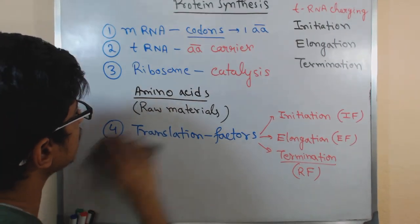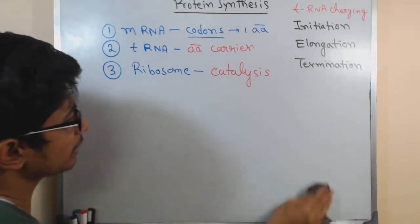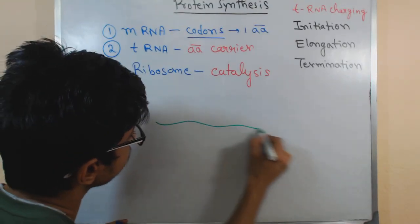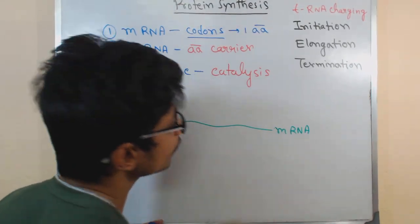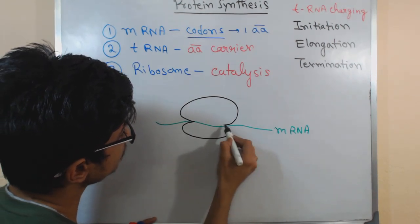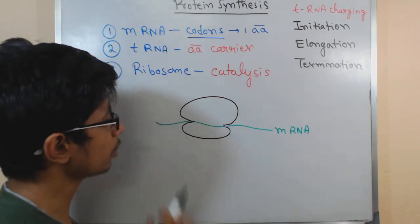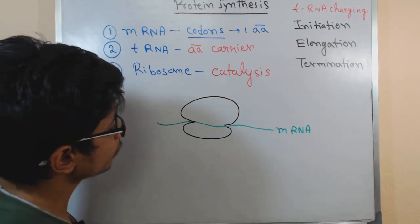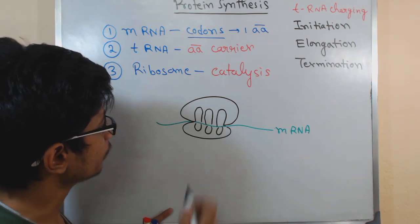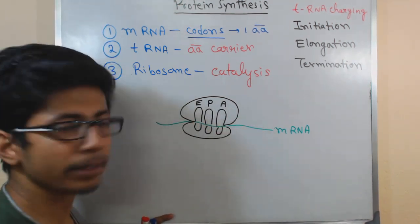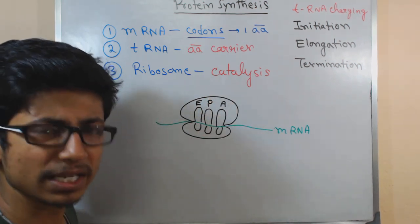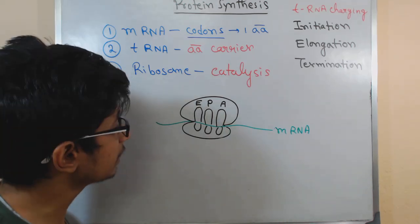The idea of protein synthesis is not very difficult — it is actually easier to understand than DNA replication. At the very beginning we have an mRNA and we require the ribosome at the core with its two subunits: the large subunit and the small subunit. The ribosome has three different regions: the E site (exit site), the P site (peptide bond forming site), and the A site (aminoacyl-tRNA addition site).